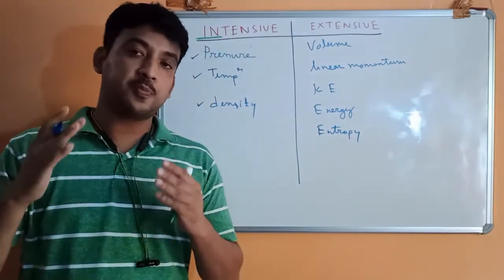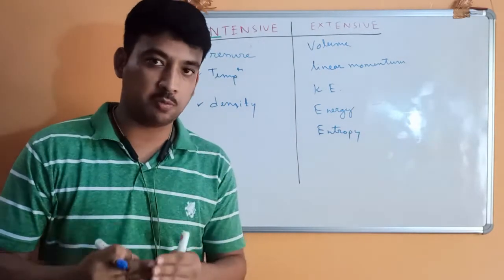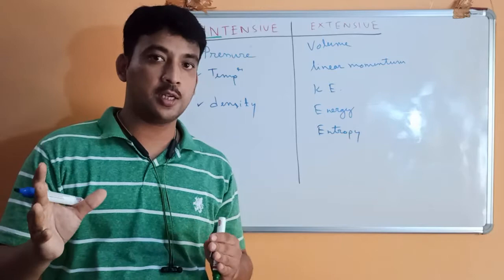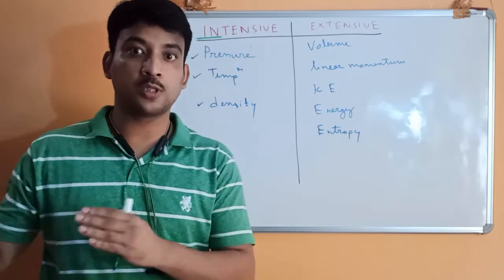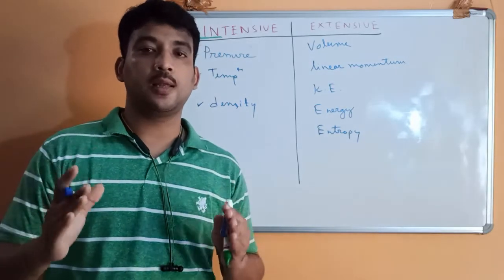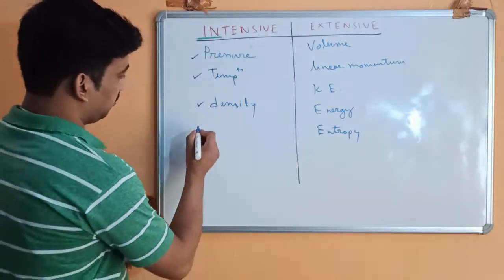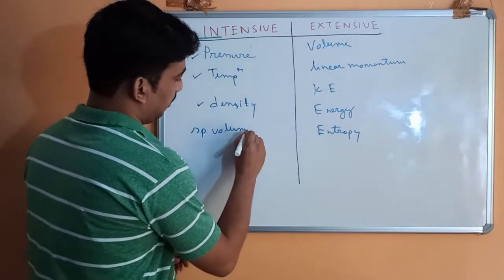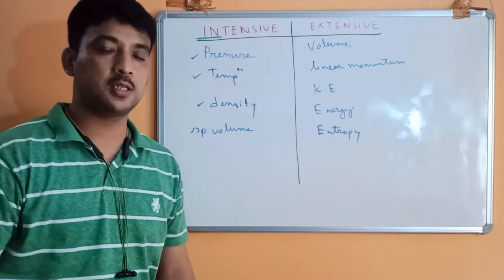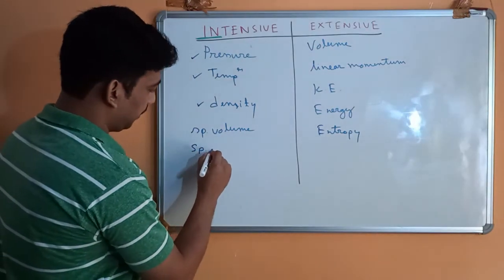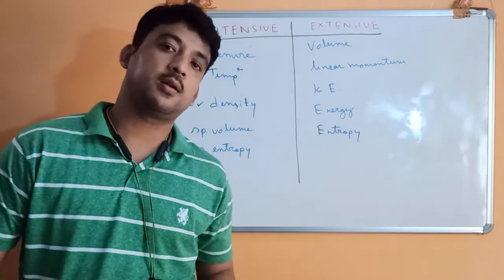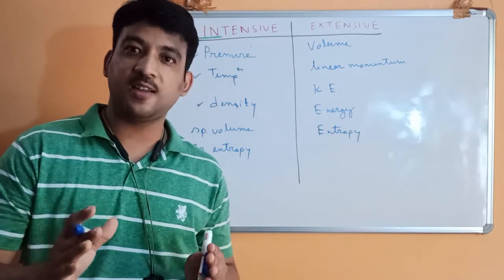But specific properties — all specific properties are intensive. When we talk about specific properties, for example specific volume, that means volume per unit mass. We consider specific properties for one unit of mass only, so mass is held constant and does not make any effect. Therefore, all specific properties are intensive properties. If volume is extensive, specific volume is intensive. Energy as a whole is extensive, but specific energy is intensive. Similarly, specific entropy is an intensive property.